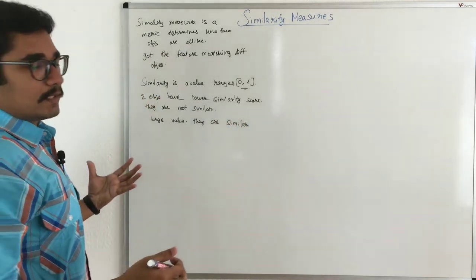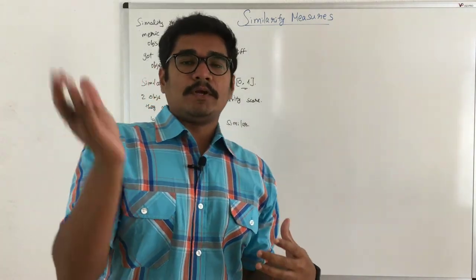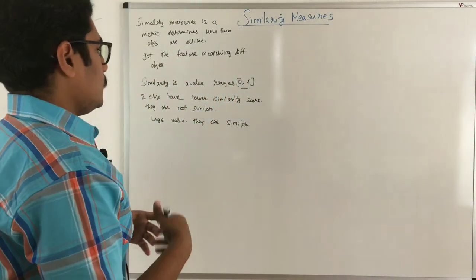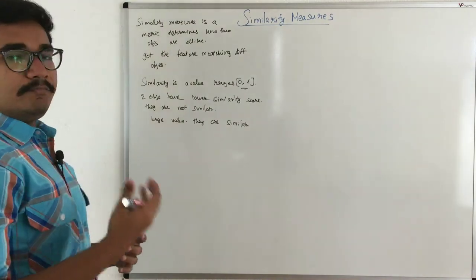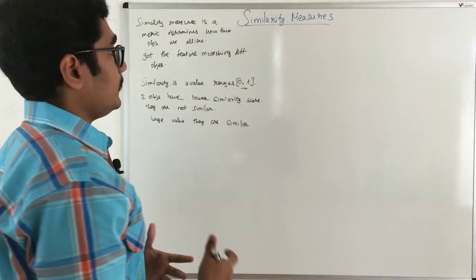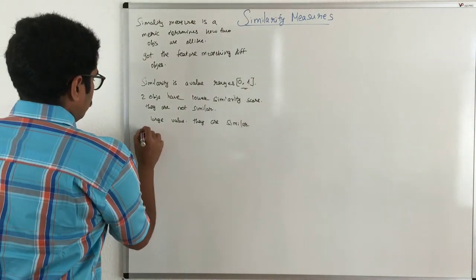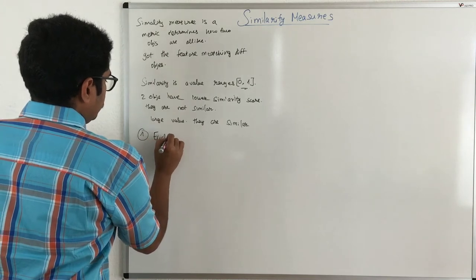Means how closely two objects are there or what is the characteristic that distinguishes between one object and the other object. Now there are certain mathematical measures where we estimate the similarity measures in clustering. So I'll give an overview of those. So very first is we have the Euclidean distance.